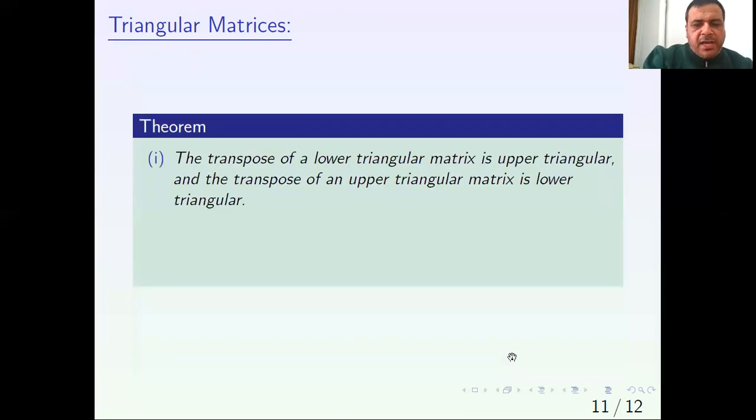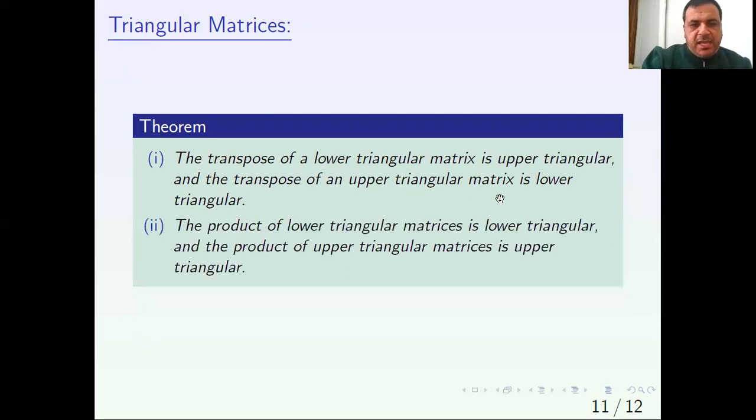Some properties of triangular matrices. First, the transpose of a lower triangular matrix is upper triangular, and the transpose of an upper triangular matrix is lower triangular. Second property: the product of lower triangular matrices is lower triangular.